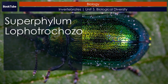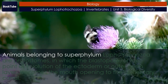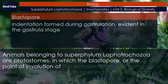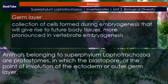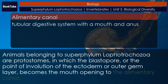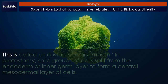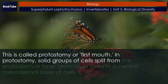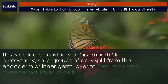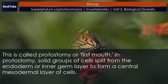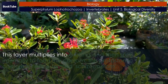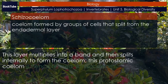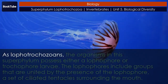Superphylum Lophotrochozoa. Animals belonging to Superphylum Lophotrochozoa are protostomes in which the blastopore, or the point of involution of the ectoderm or outer germ layer, becomes the mouth opening to the alimentary canal. This is called protostomy, or first mouth. In protostomy, solid groups of cells split from the endoderm or inner germ layer to form a central mesodermal layer of cells. This layer multiplies into a band and then splits internally to form the coelom. This protostomic coelom is hence termed schizocoelom, as Lophotrochozoans.